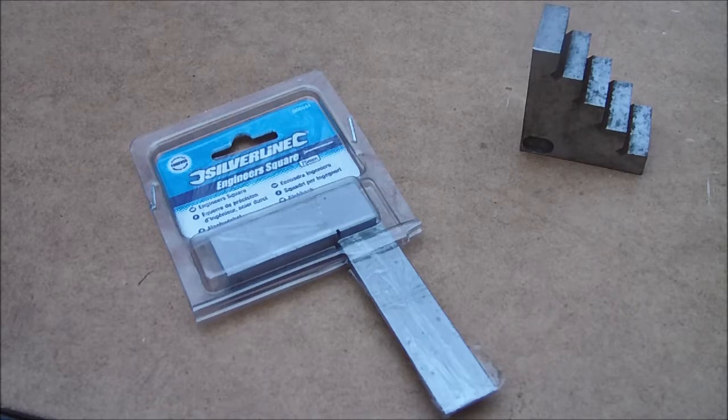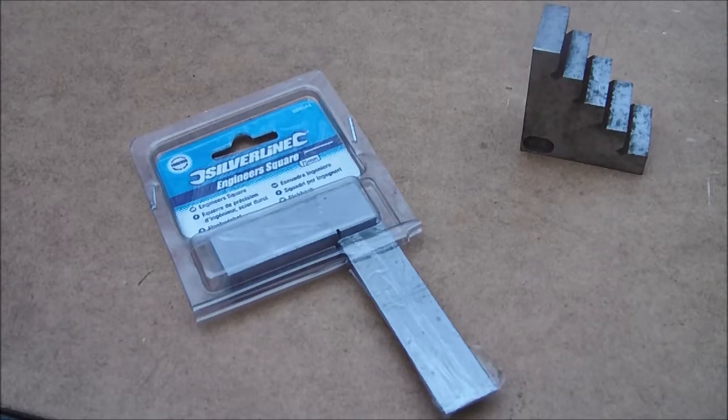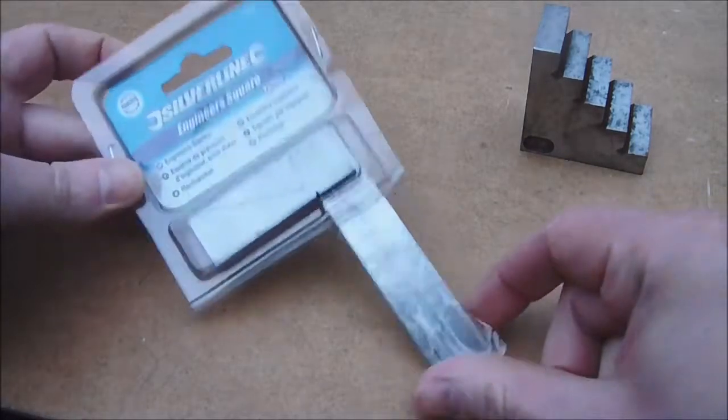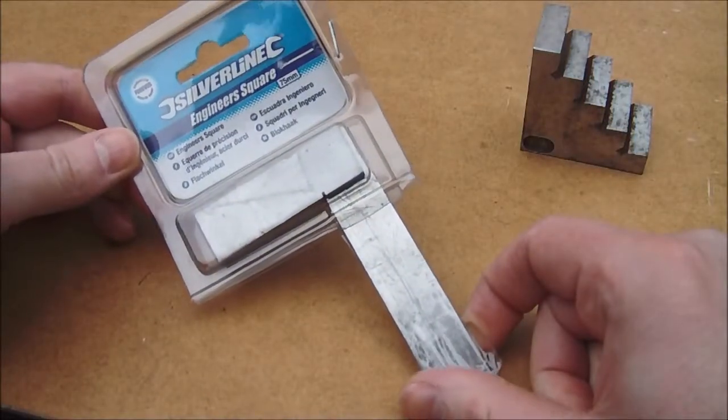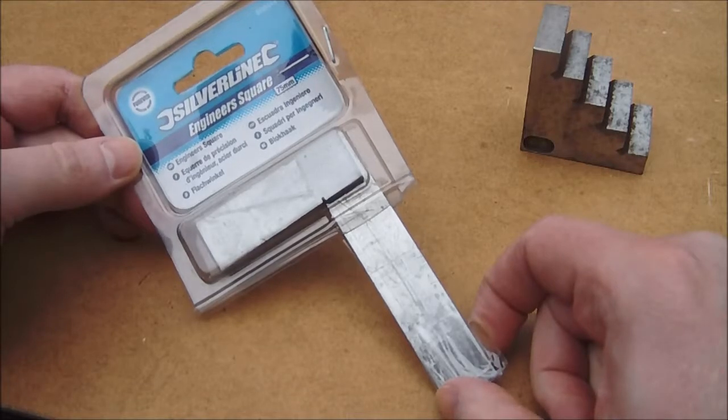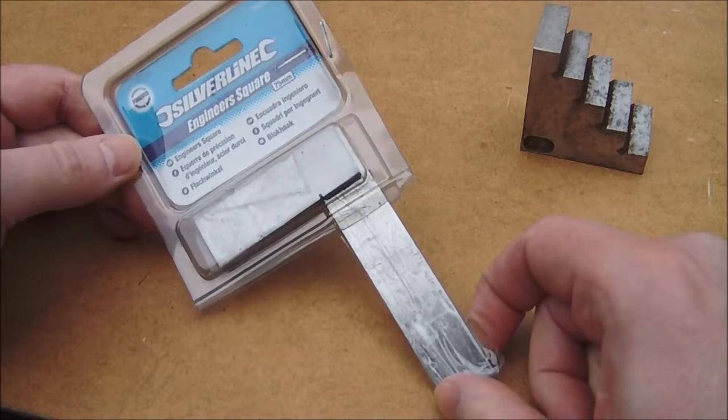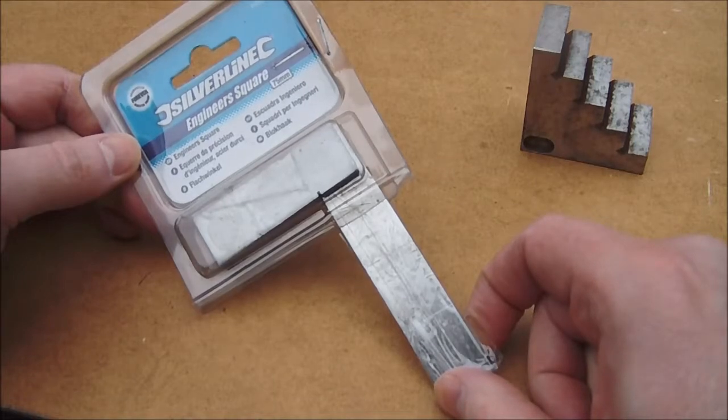Today we'll be taking a look at the Silverline engineer squares. In this case, this is the 75 millimeter version, the smaller tiny little one. A lot of people out there getting into engineering have been trying to find themselves some squares and don't seem to be able to find any decent ones.